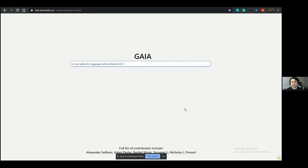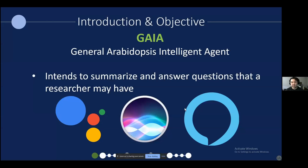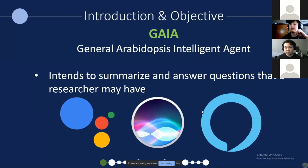The idea of Gaia is to create a web tool to aggregate and synthesize information across many different databases and tools, and use it for plant biology to be able to easily and accessibly answer questions a researcher may have on the topic. A quick way to think about what Gaia is: it's very similar to Google Assistant, Siri, Cortana, or Alexa, where you ask a question and it presents the answer using a knowledge graph in an accessible way.